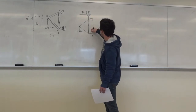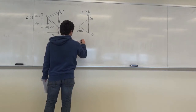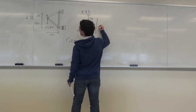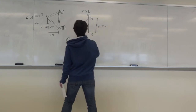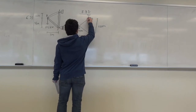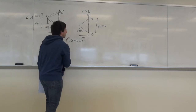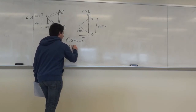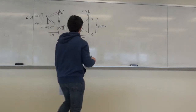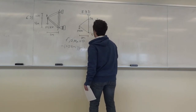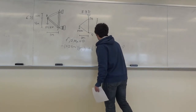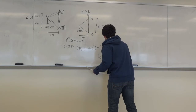We can determine F_C by summing moments at A to be zero, taking counterclockwise to be positive. The dimension here to here is 5.25 meters, and this dimension is 3 meters. So: −5.25 × F_C + 3 × 84 = 0. Solving for F_C gives F_C = 48 kilonewtons.